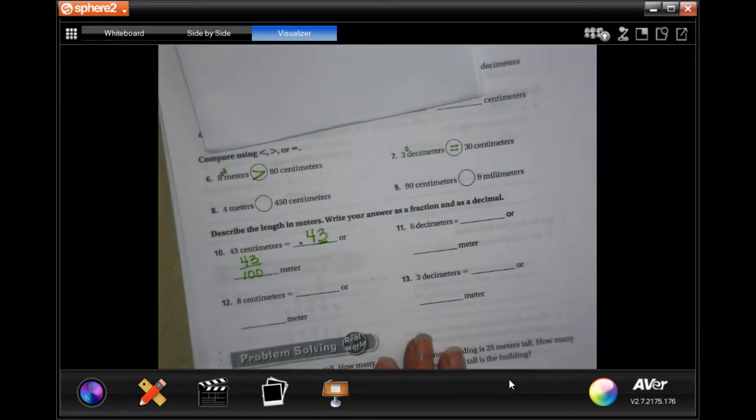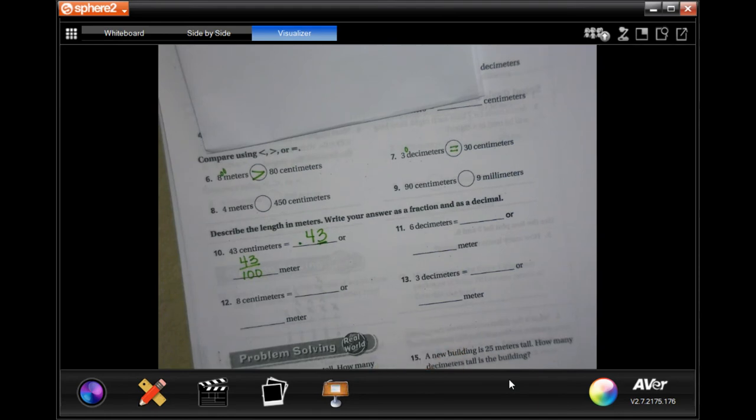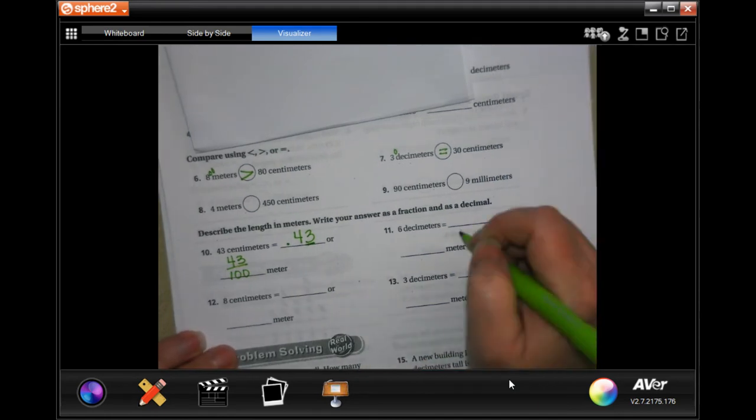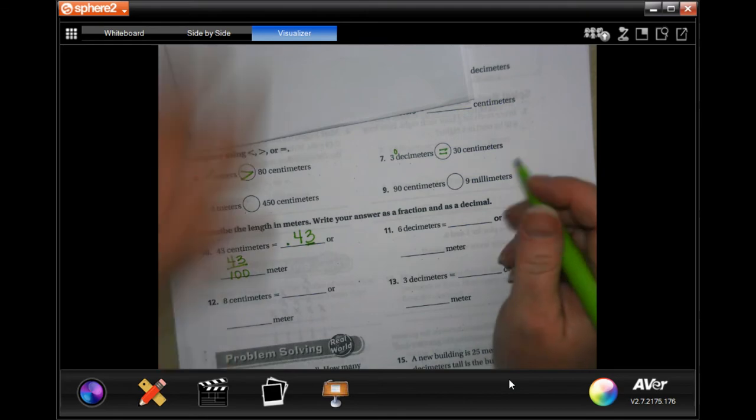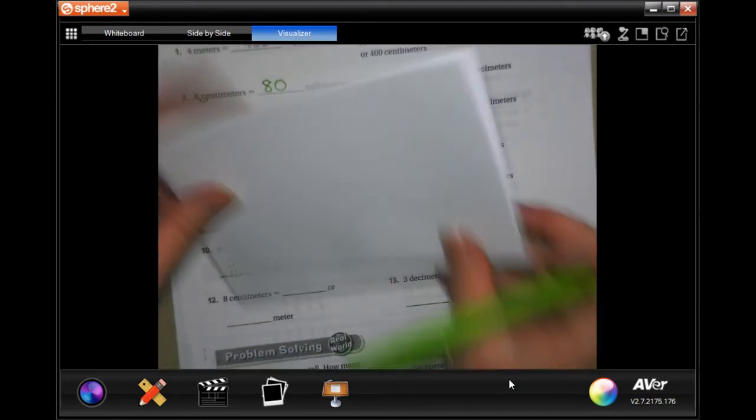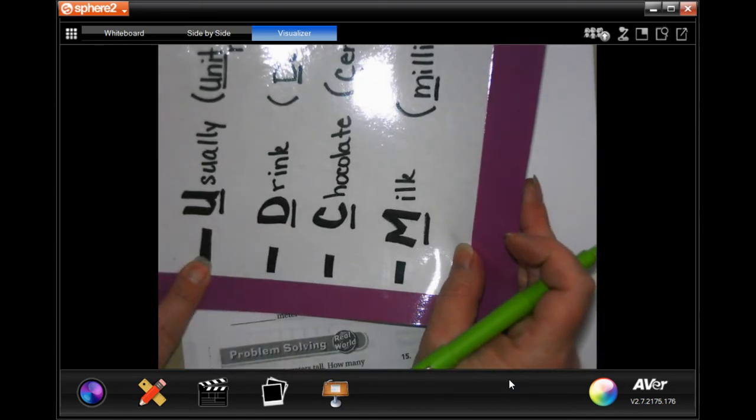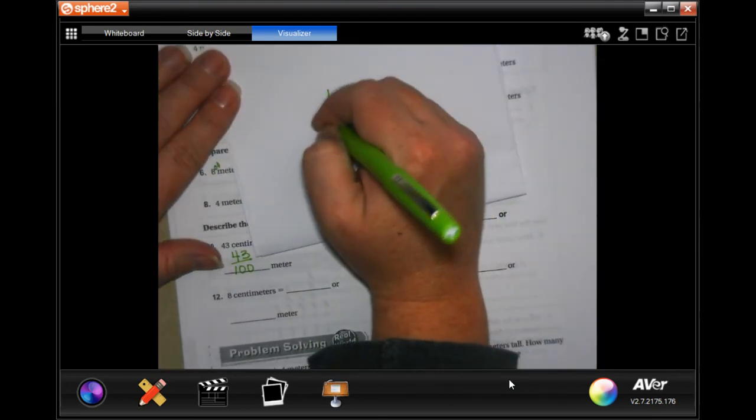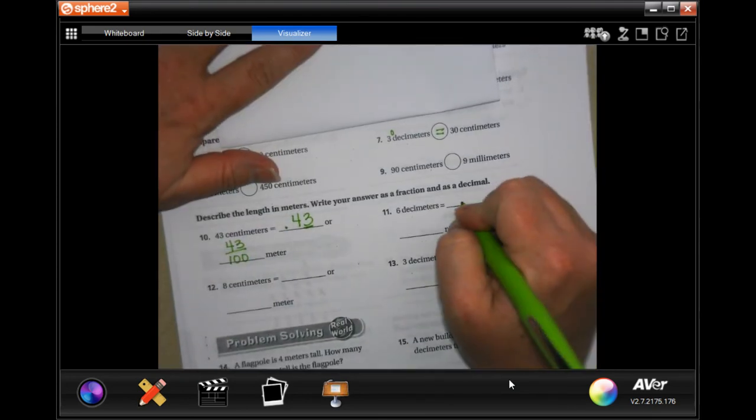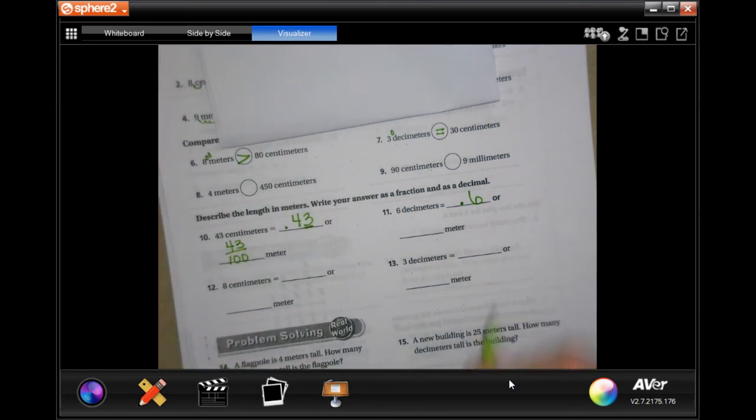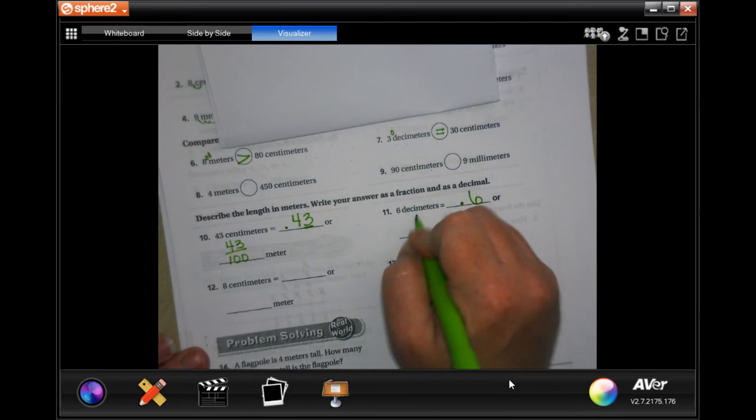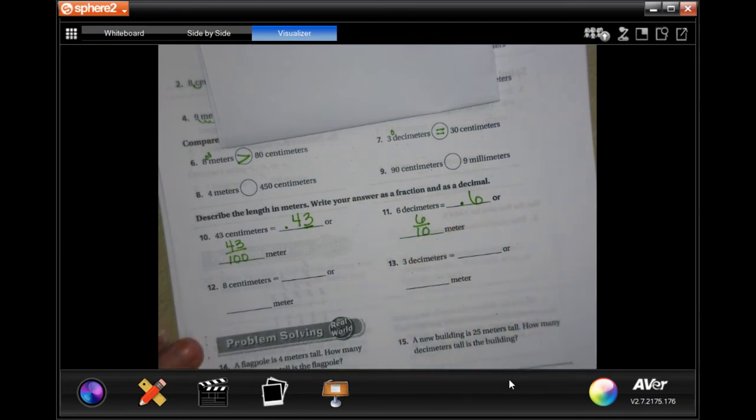Not so bad once you get used to it guys. All right, six decimeters. Now we have to go from decimeters to meters. So six where our decimals right there, decimeters to meters. We're just going to have one time to the left so 0.6, and that six is in the tenth spot.